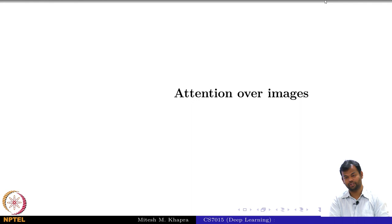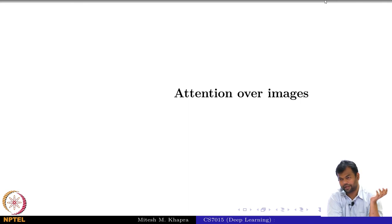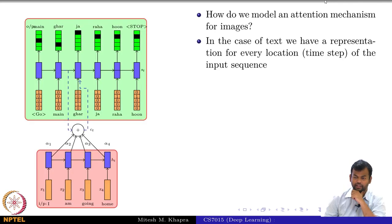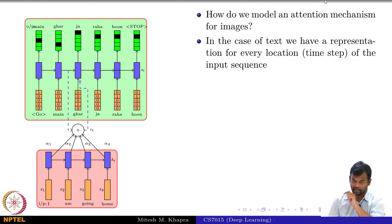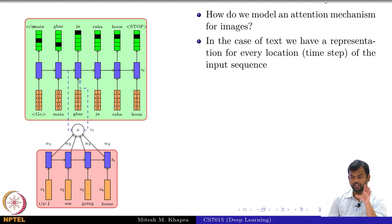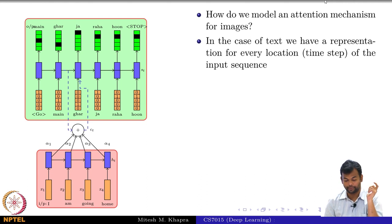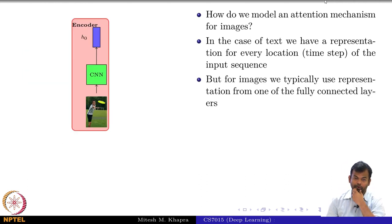Now in this lecture we will go on to the next module which is talking about attention over images. Let us first motivate why it is so different and what could be done there. The question is how do you model an attention mechanism for images. In the case of text we have a representation for every location of the input sequence — every location was a word or a character — and it was discrete. We could know the input at time step t and pay attention to certain time steps. But for images, what do we do?